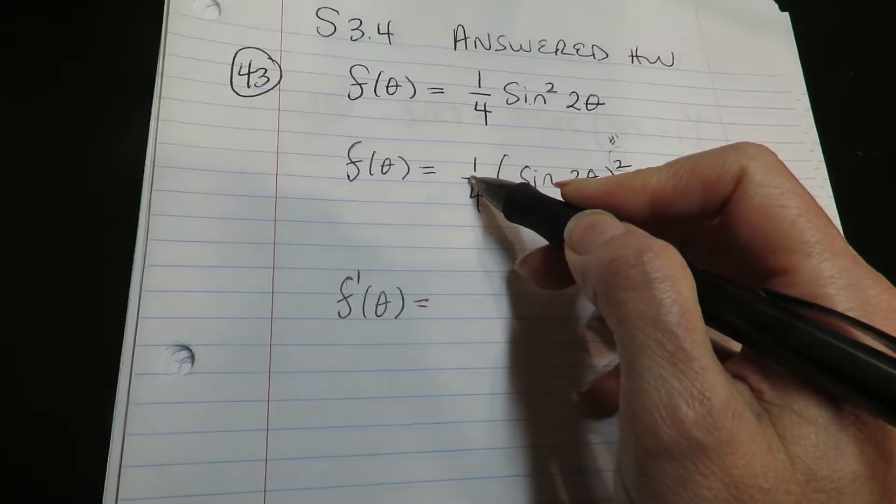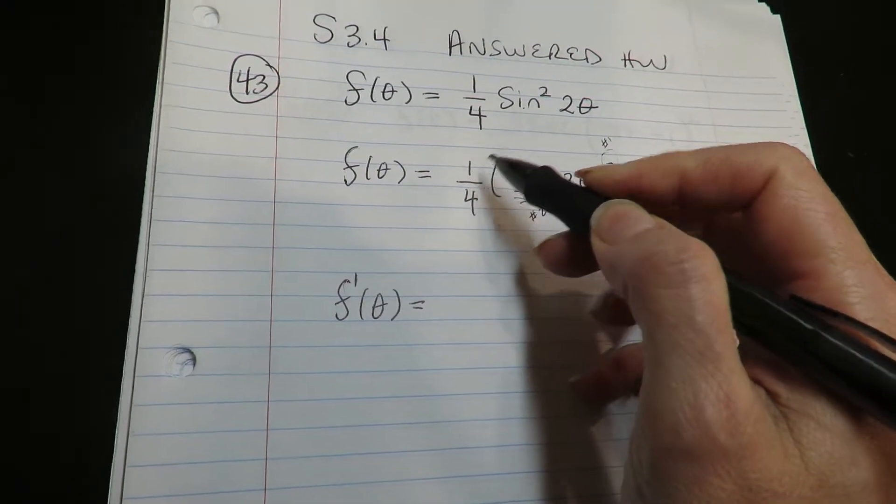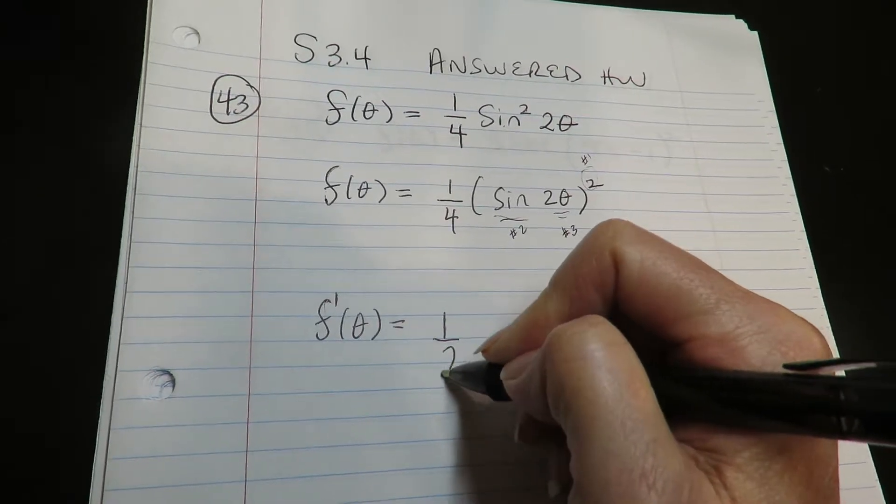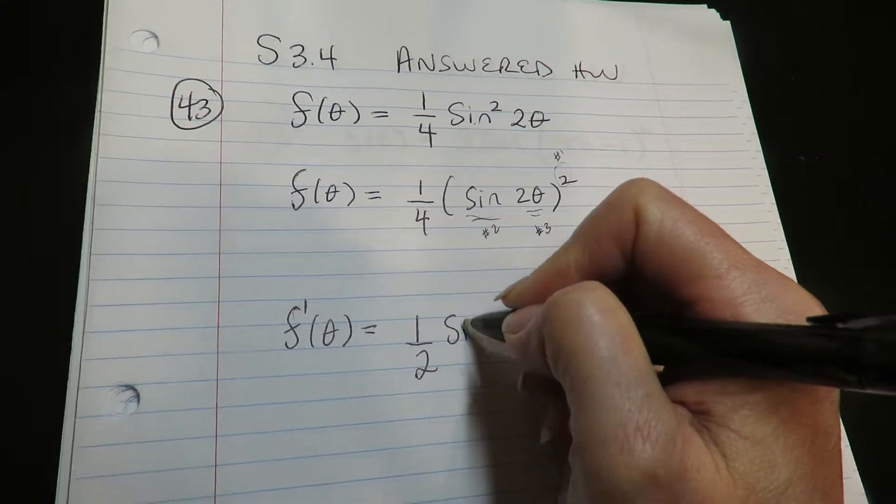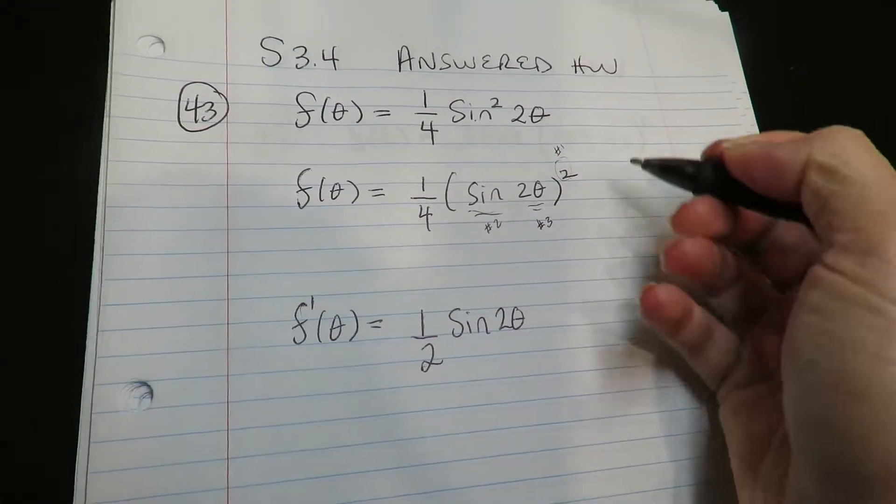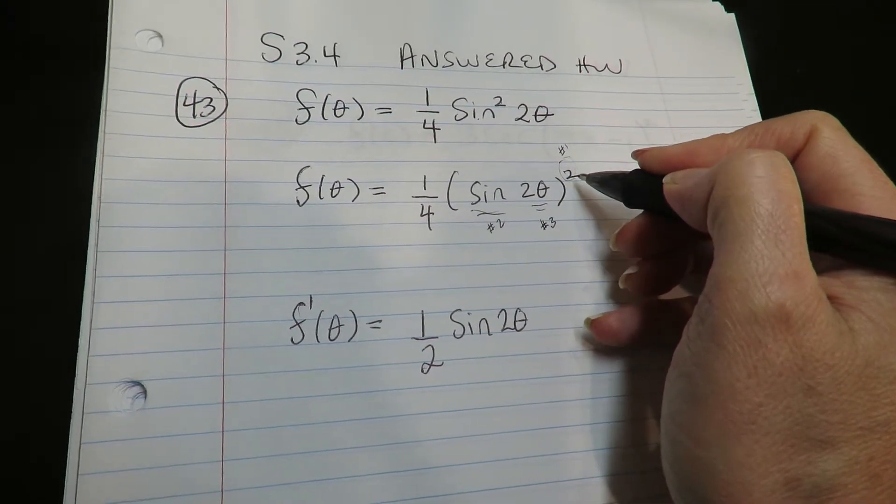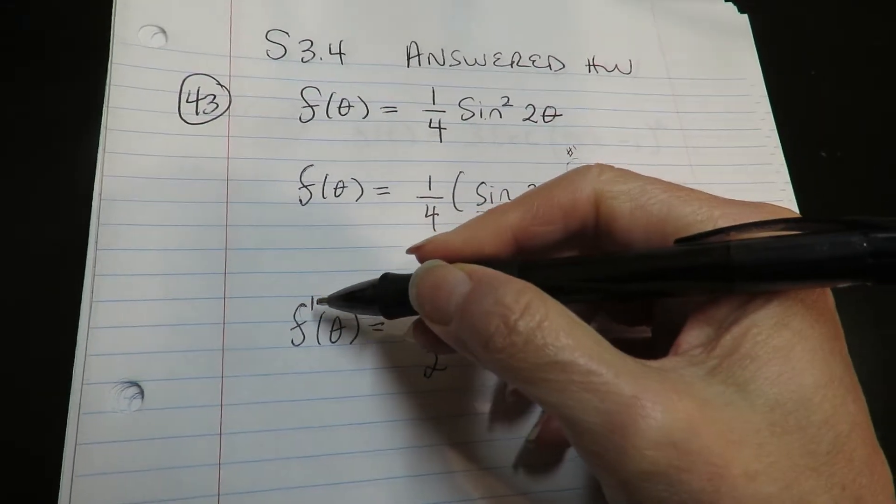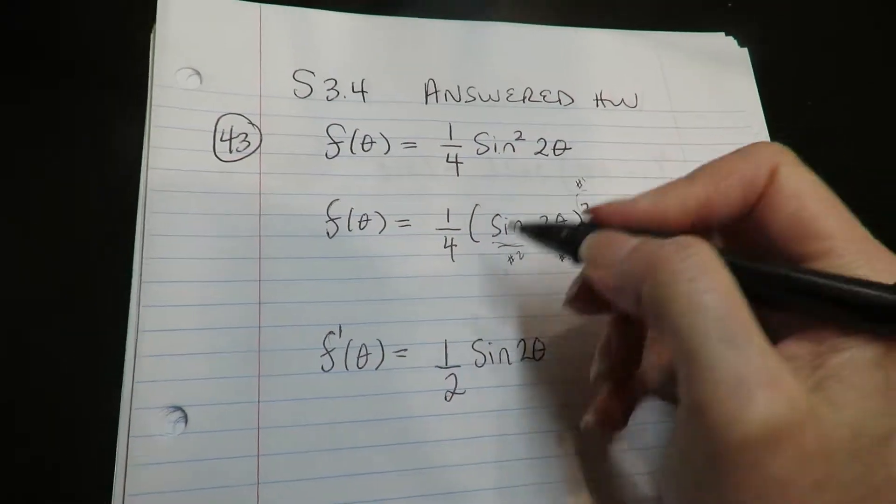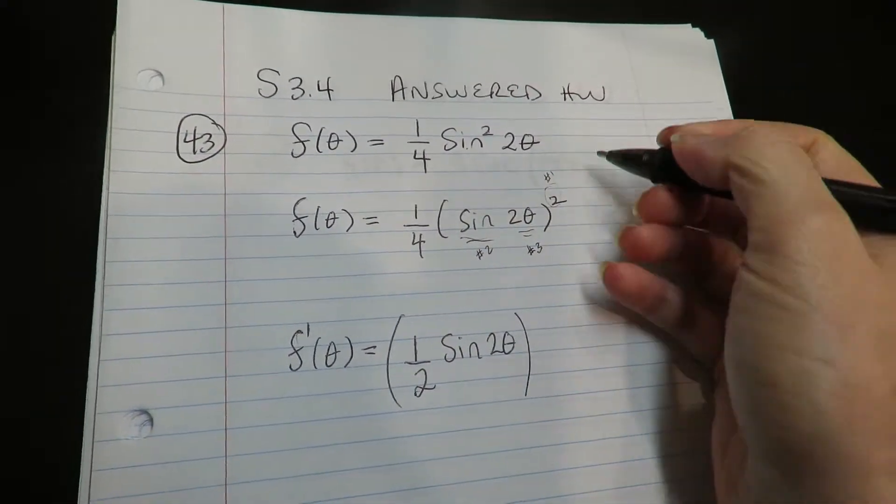All right, so now we're going to use a power rule. Bring the two down in front. Multiply it times one-fourth. That's going to give me one-half. Keep everybody else the same. This becomes a one, and since it becomes a one, I don't write it because that looks too similar to prime. So this is the derivative of the first layer.